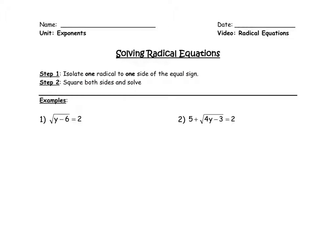Let's look at an example. Example number one says the square root of y minus 6 equals 2, and as you can see one of the radicals is already isolated all alone on one side of the equal sign. So now we can square both sides — we're going to put a squared here and a squared here.